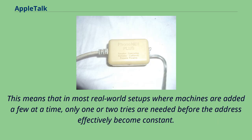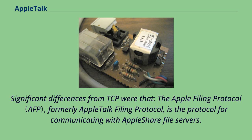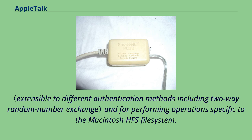The Apple Filing Protocol (formerly AppleTalk Filing Protocol) is the protocol for communicating with AppleShare file servers. Built on top of AppleTalk Session Protocol or the Data Stream Interface, it provides services for authenticating users and performing operations specific to the Macintosh HFS file system. AFP is still in use in macOS, even though most other AppleTalk protocols have been deprecated. ASP was an intermediate protocol built on top of ATP, which in turn was the foundation of AFP.